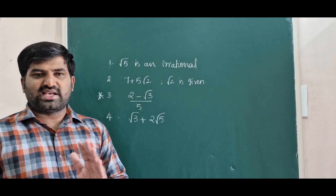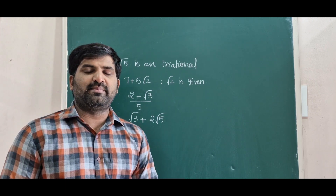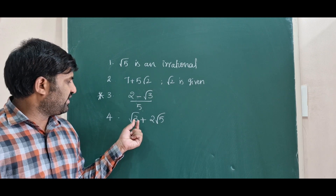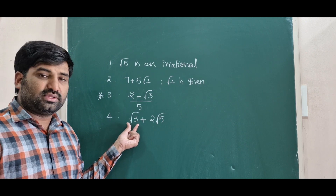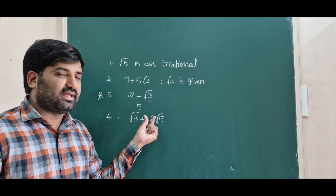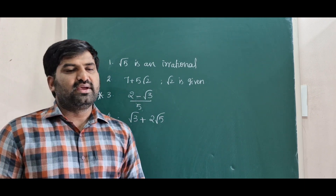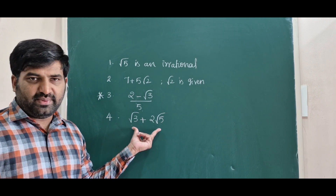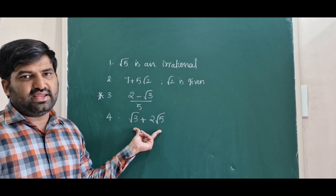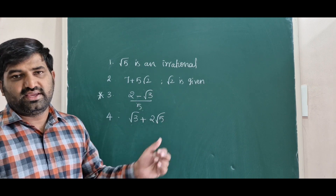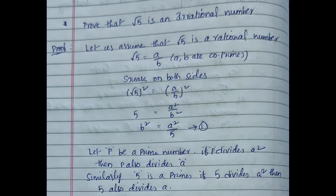In questions 2 and 3 we have only one irrational number — we need to transpose and prove the given number is irrational. But in question 4 we have to prove that root 3 plus 2 root 5, which is the sum of two irrational numbers, is also irrational. The process for this will be different, so I will explain clearly how to prove root 3 plus 2 root 5 is an irrational number.